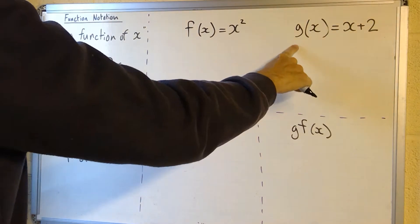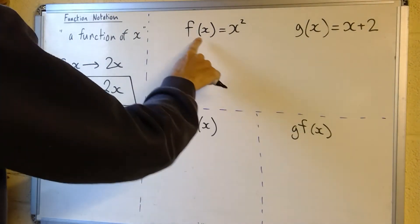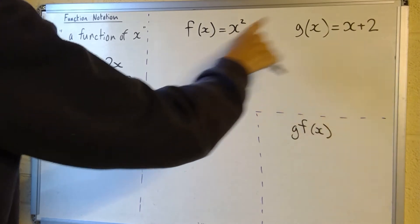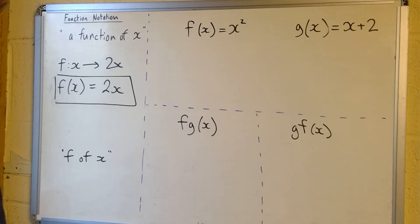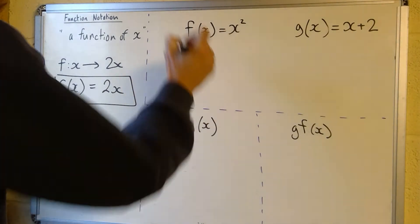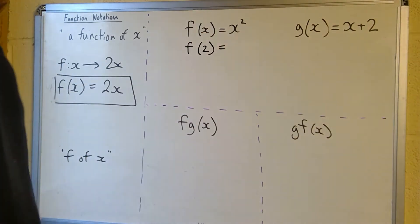So g of x, that's a different function, is x plus 2. So really this function is square the input, this function is add 2 to the input. It's a good idea to think of functions as inputs and outputs. That works quite well. This notation is quite neat because if I now put f of 2, that basically means substitute 2 as your input into this function.